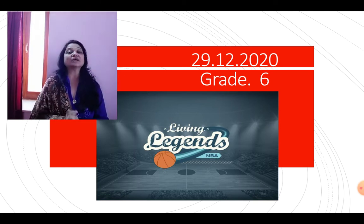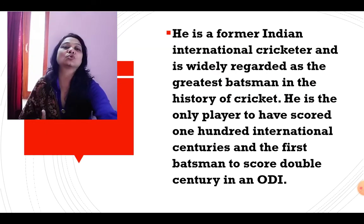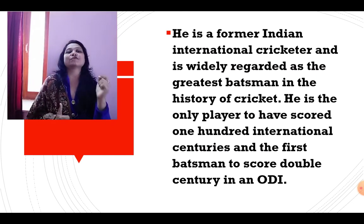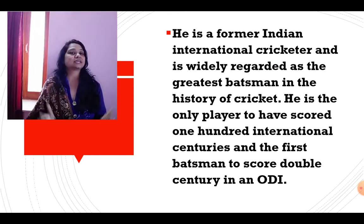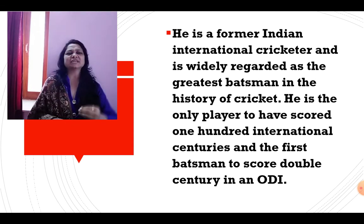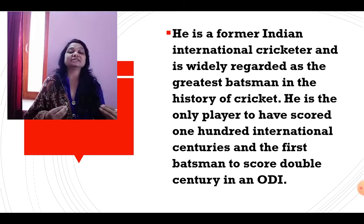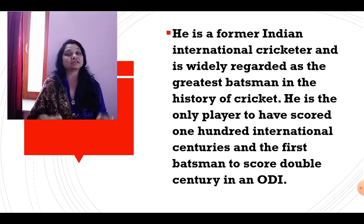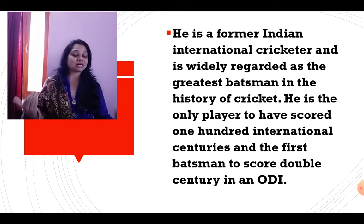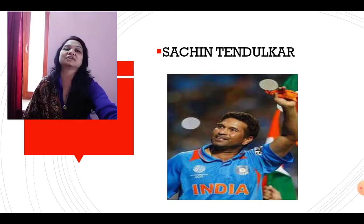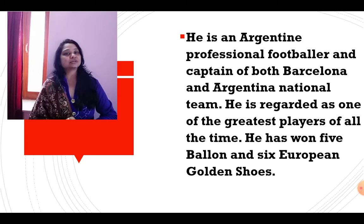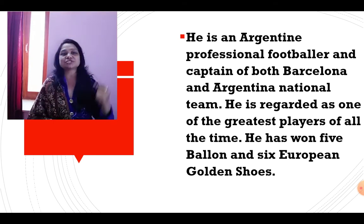The first one is a former Indian international cricketer, widely regarded as the greatest batsman in the history of cricket. He is the only player to have scored 100 international centuries and the first batsman to score a double century in an ODI. The answer is Mr. Sachin Tendulkar.